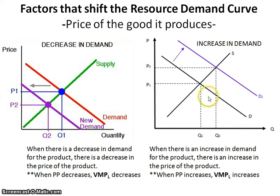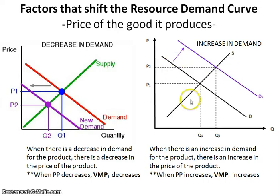The converse is also true. When there's an increase in demand for a product, you're going to make more of the good, and so you're going to need more workers. When you have an increase in demand for the product, the product price will go up, and this is going to also cause the value of the marginal product to increase.